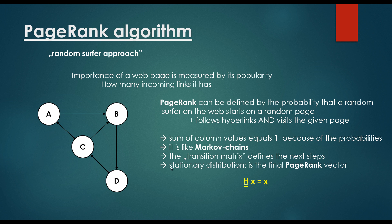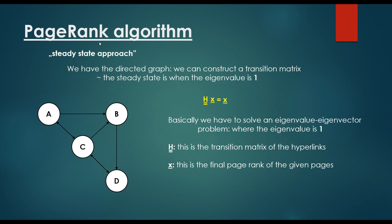And we have the stationary distribution, which is the final page rank vector, and for Markov chains, how are we able to get the stationary distribution, we just have to solve an eigenvalue, eigenvector problem again, as we have discussed for the steady state approach. So basically, we have to calculate the eigenvector when the eigenvalue is equal to 1, and this eigenvector is going to store the page ranks for the given websites accordingly.